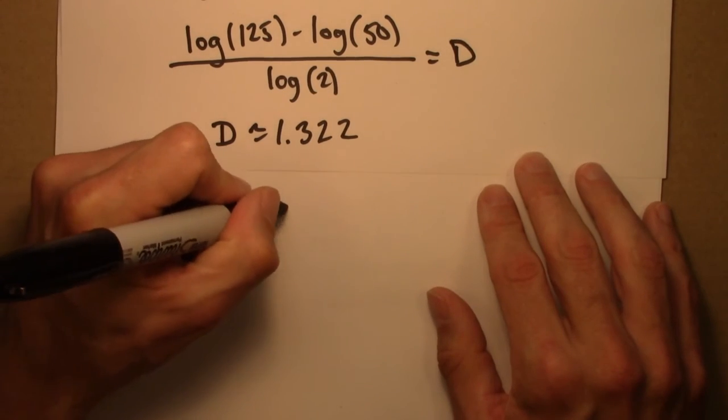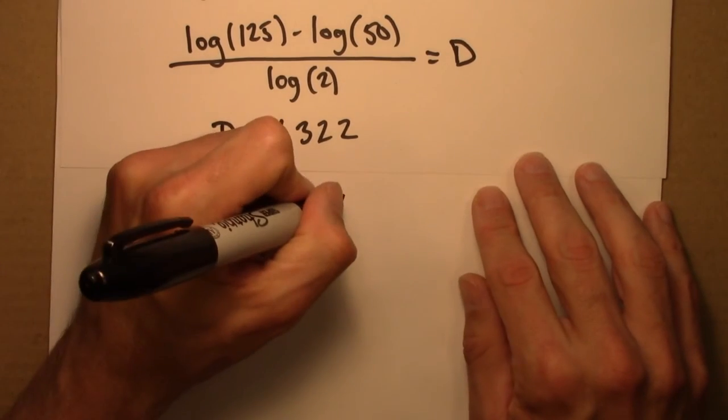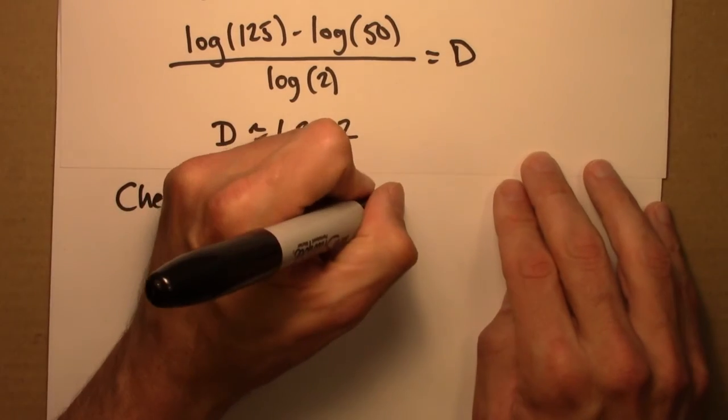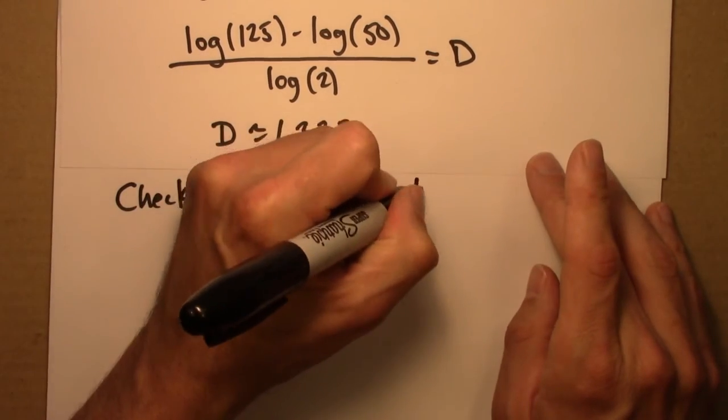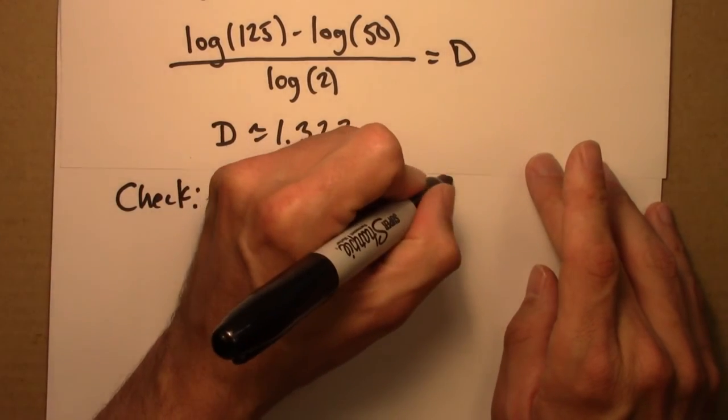So 125. Does that really equal 50 times 2 to the 1.322?